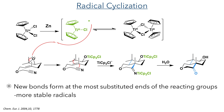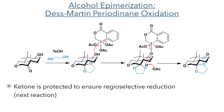This reaction produces only a single isomer, which can be attributed to the chair-like transition state. Studies into the mechanism have shown that it does not occur through a concerted mechanism but instead each radical addition happens sequentially. While the two rings were formed with the correct stereochemistry, the hydroxyl group produced by the ring opening of the epoxide was in the wrong configuration.